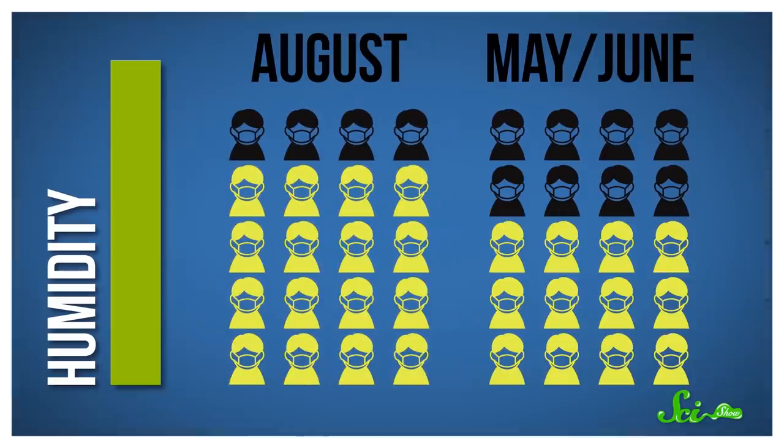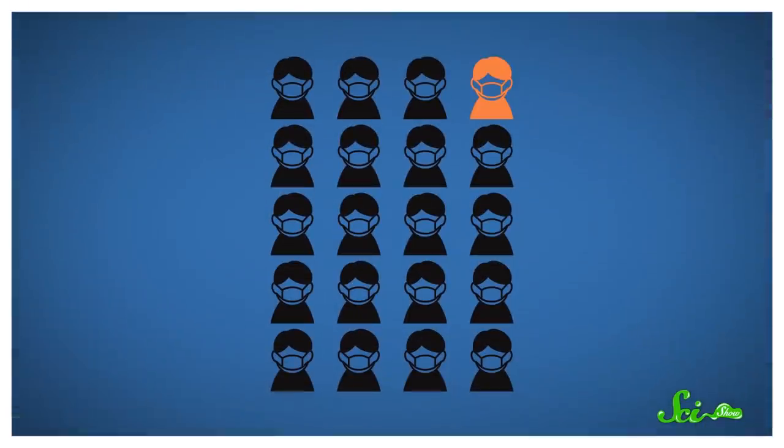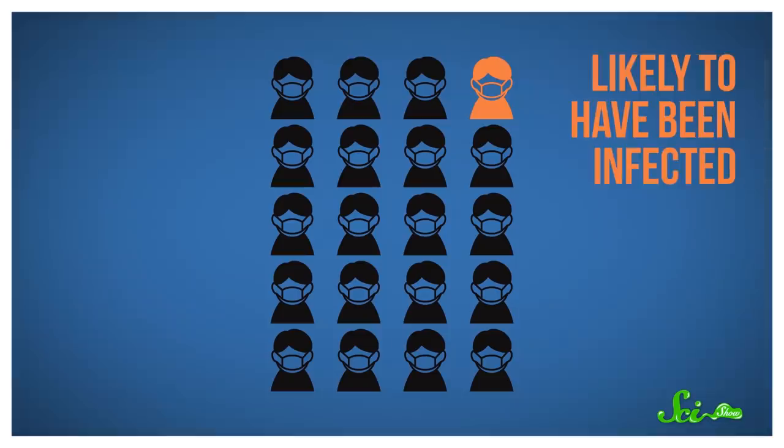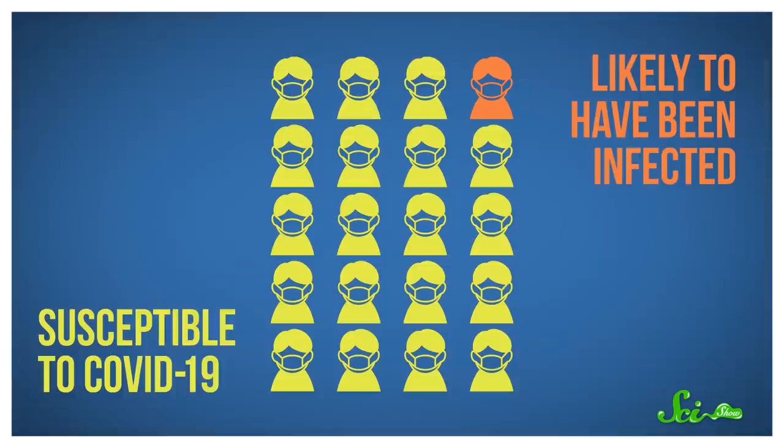For May and June, even 60% susceptibility was enough. For reference, at the time we're making this video, only a very small fraction of people in the US are confirmed to have gotten sick with COVID-19. The real total here is likely to be higher, maybe much higher. But even according to the biggest estimates, less than 5% of the population are likely to have been infected so far. So way more than 80% of the population is still susceptible to it.